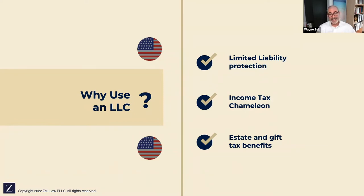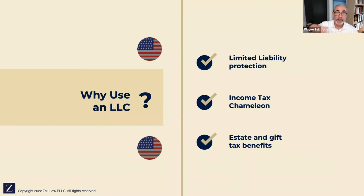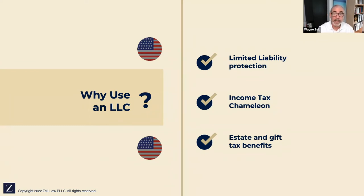For estate and gift tax purposes, if I take a piece of my LLC and gift it to a family member or a trust for the benefit of a family member, I can claim a valuation discount under current law of as much as 35-40% of that interest, even though it owns an asset worth say $10 million. If I discount it by 35%, that valuation discount is worth $3.5 million, and the tax benefit to my heirs is 40% of that amount — or $1.4 million. That's something to think about when doing your estate planning, particularly if you're in a higher estate tax bracket.